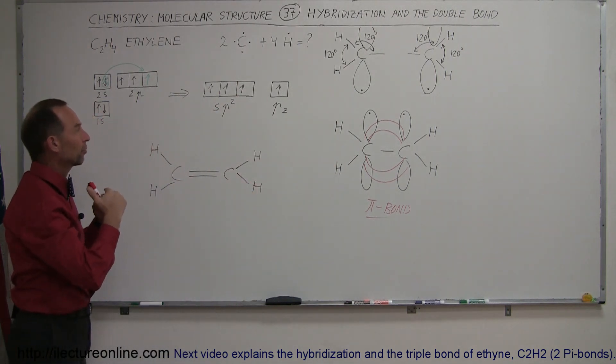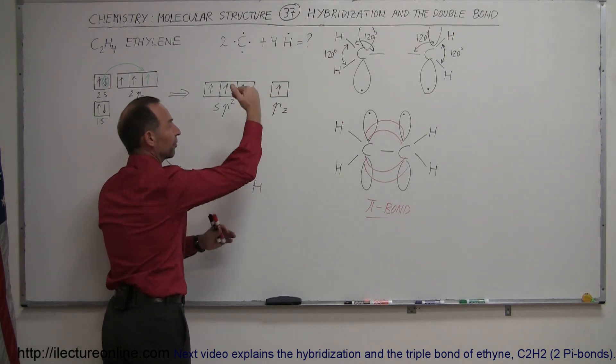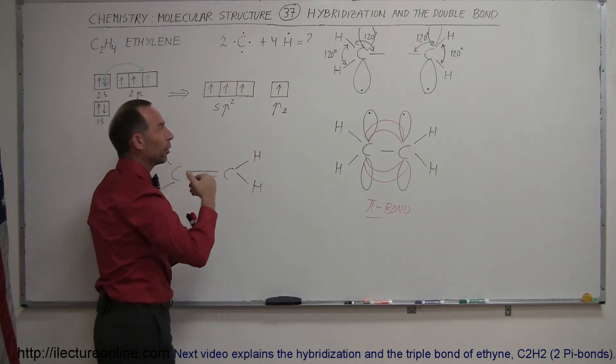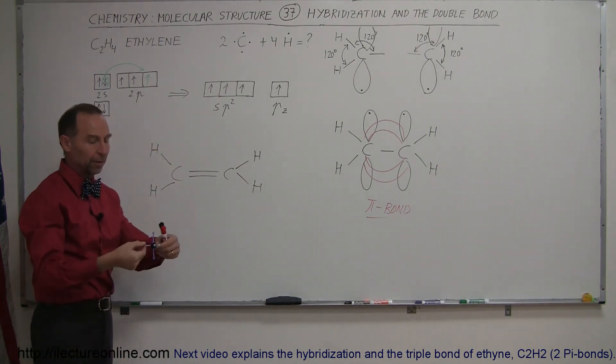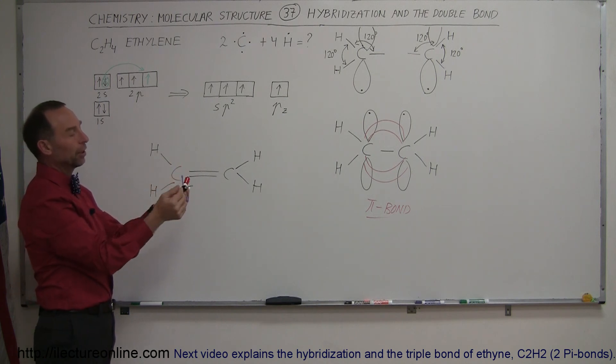So that's a planar, a trigonal planar format. And then we have the p orbital that still survives sticking up above and below the molecule. Again, looking like that. So the p orbital sticks up above and below, which then is able to bend over and form a uniformed pi bond.